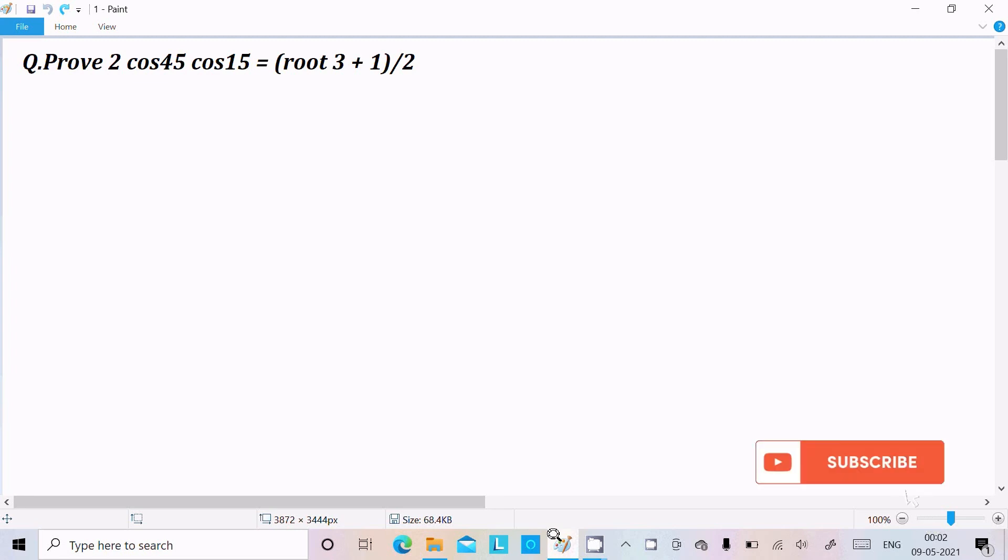Hello friends, in this video lecture I am going to prove 2 cos 45 cos 15 equals root 3 plus 1 divided by 2. Let's see the answer. I am going to take the LHS, that stands for left hand side.